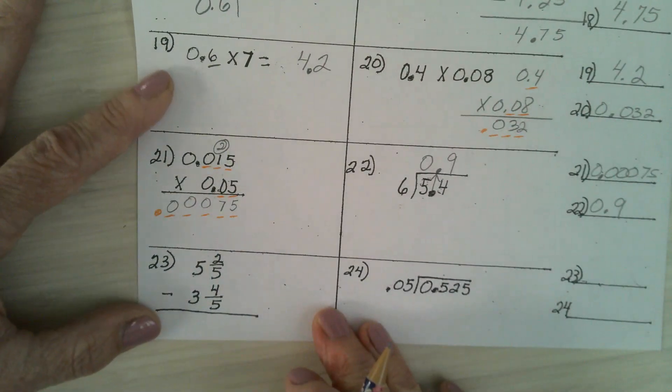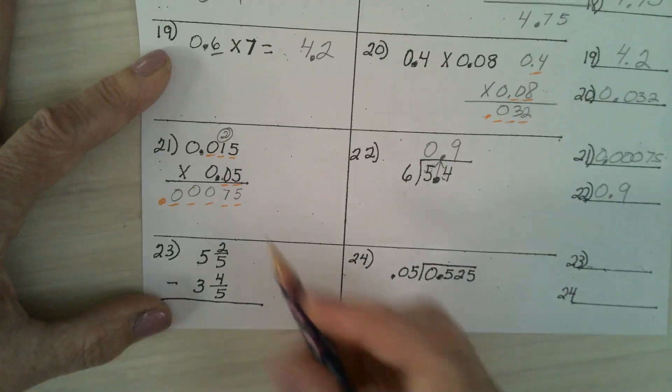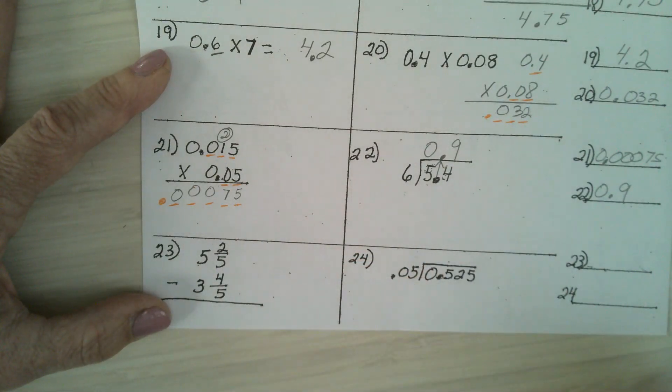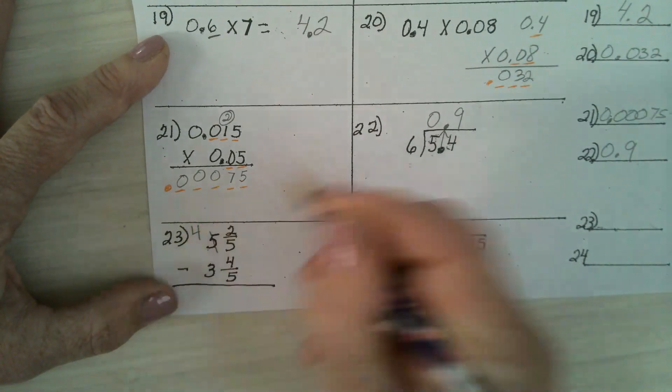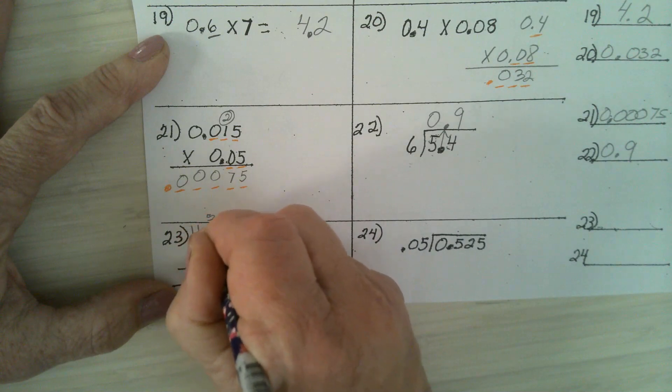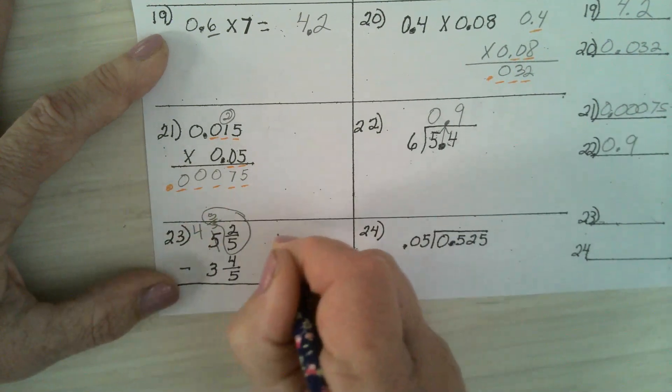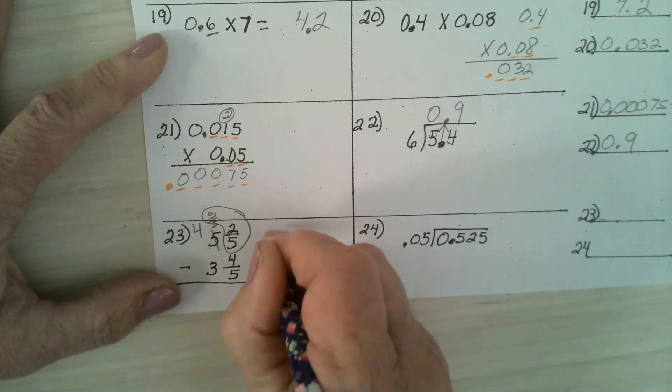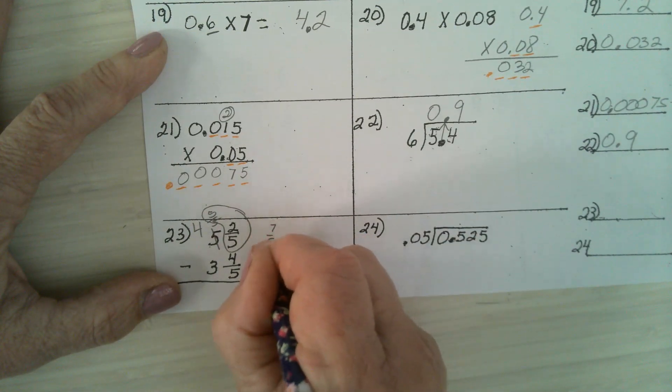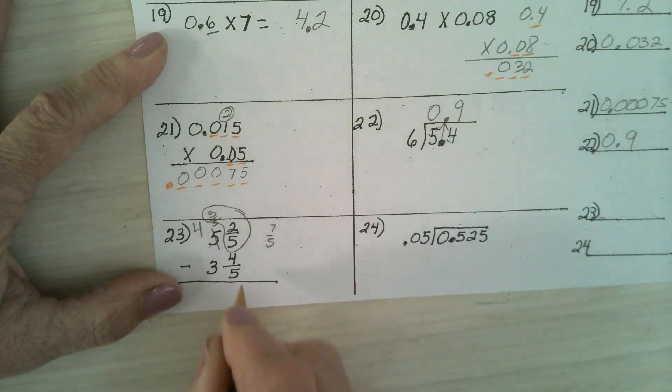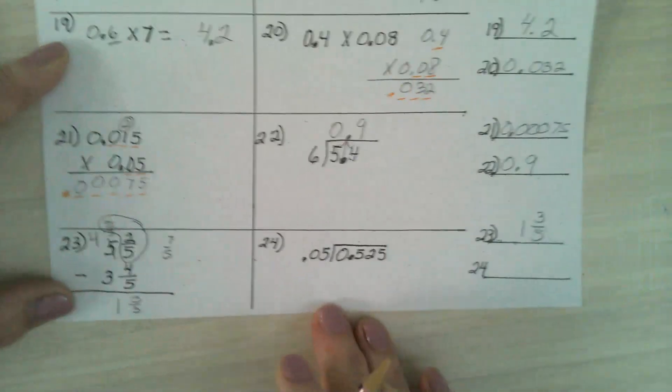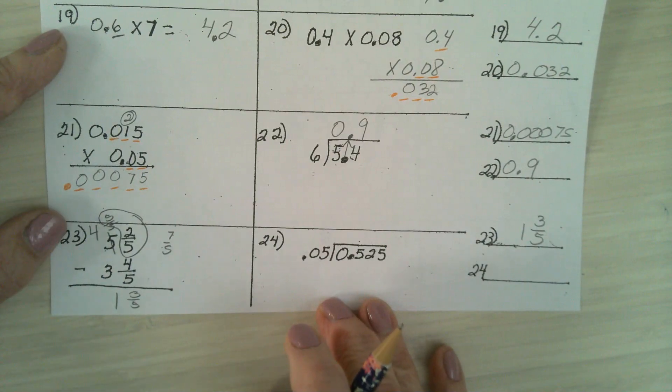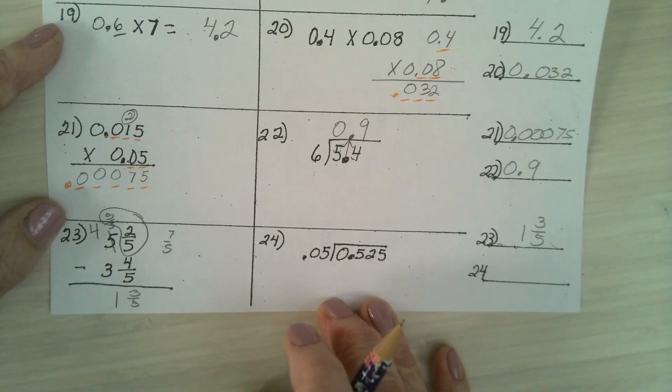Number 23. Can 2/5 subtract 4/5? No. It needs help. And 5 says, I will help you. I will turn into 4 and 5/5. 5/5 combines forces with 2/5, making it the mighty 7/5. 7/5 minus 4/5 is 3/5. 4 minus 3 is 1. 1 and 3/5. Landon, write this down instead of playing with a paper clip.